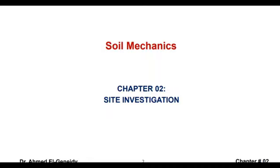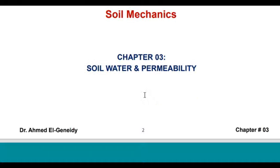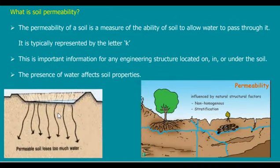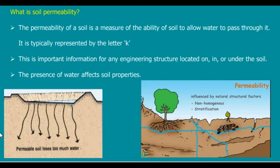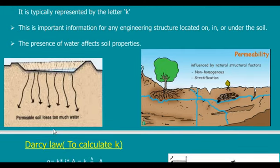We took soil classification to understand the different particles of soil, and we learned about site investigation so that we can go to the site, make some tests, get some samples, take them to the lab, and get the parameters. In this chapter, we are going to discuss the effect of water on soil. Water is everywhere — it comes from the sky, seas, oceans — and there is also underground water below the ground.